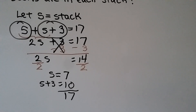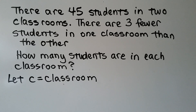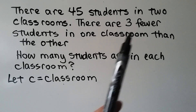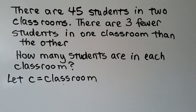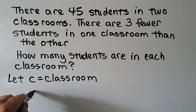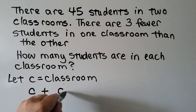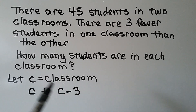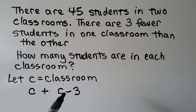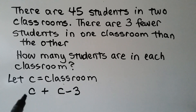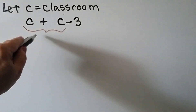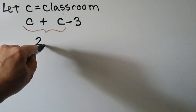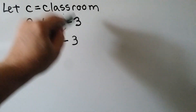Let's try another one with subtraction. There are 45 students in two classrooms. There are three fewer students in one classroom than the other. How many students are in each classroom? So we can use c for classroom. So we have c plus a c minus three. Here's one classroom, here's the classroom that has three fewer. We can also write it as c minus three plus c — it doesn't matter. But putting the two c's together, we get 2c minus three, and we know it equals 45.